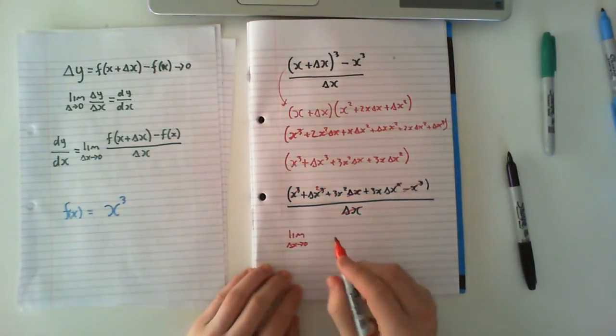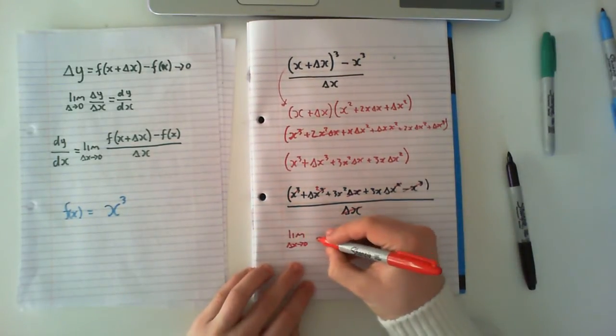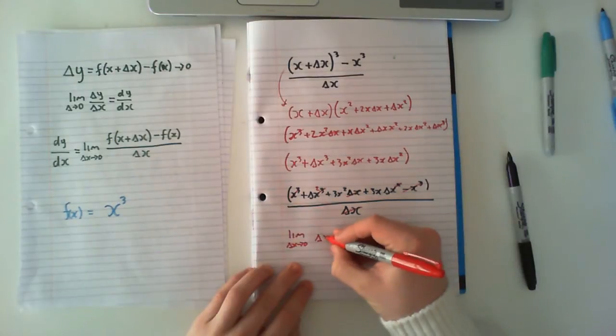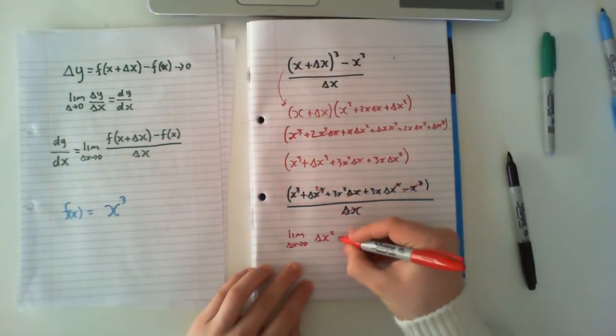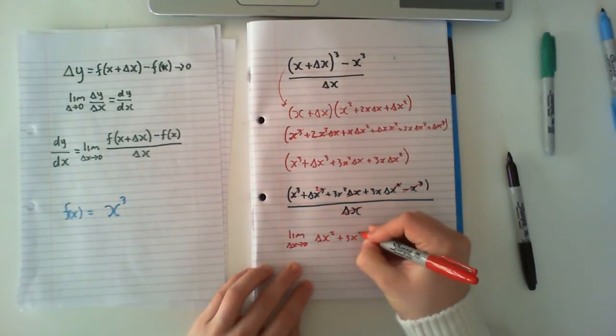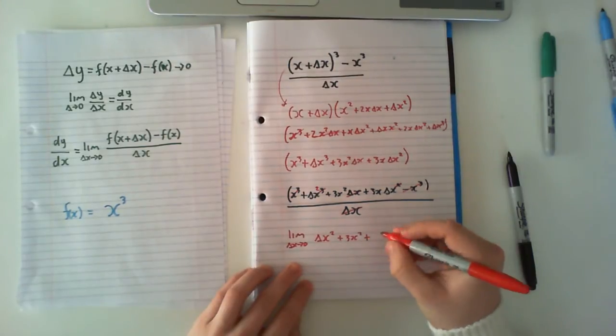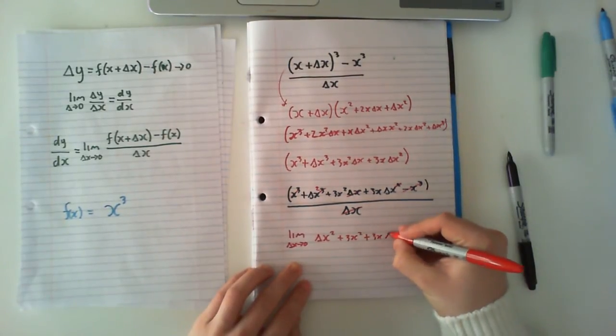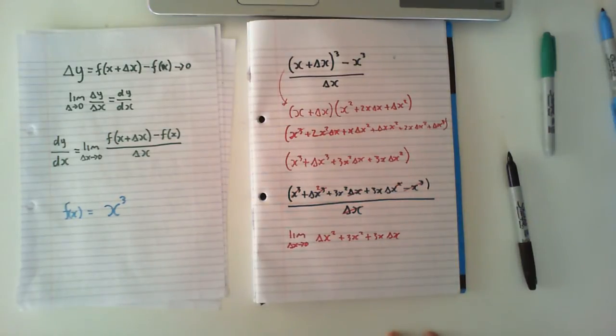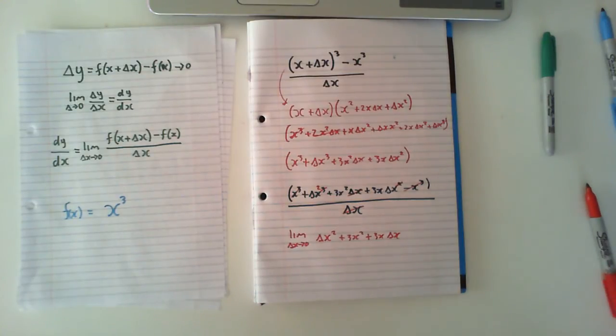And as delta x goes to 0, what do we have left? We have delta x squared plus 3x squared plus 3x delta x. Now we take the limit to 0 here. We haven't got to use any other rules because we're not going to have divisions by 0 at the bottom and by the top. We haven't really got to deal with anything here.